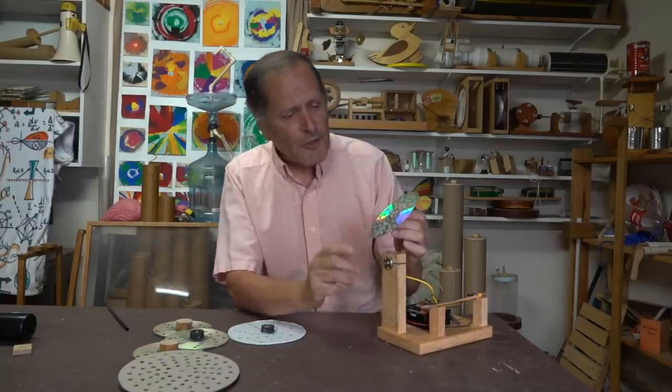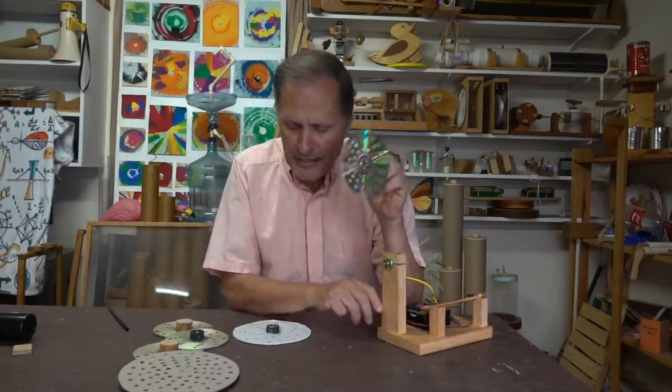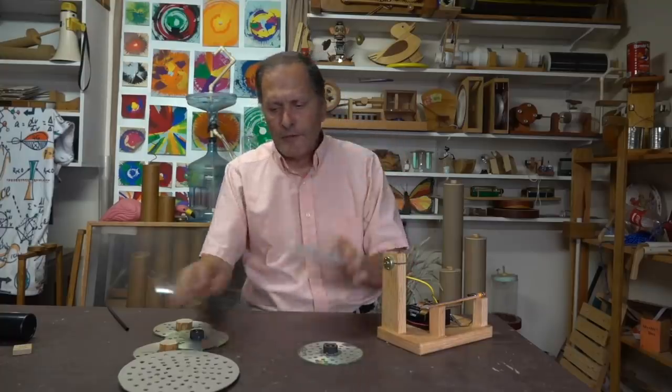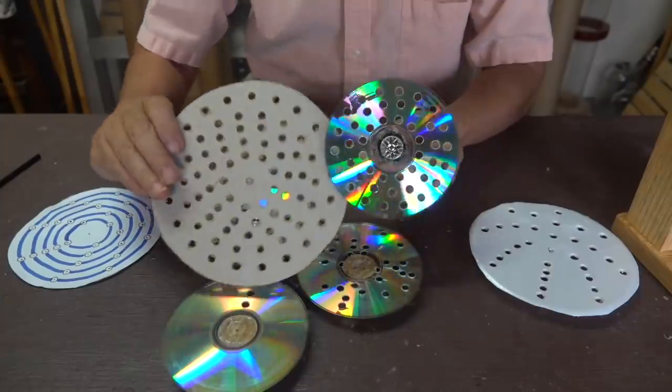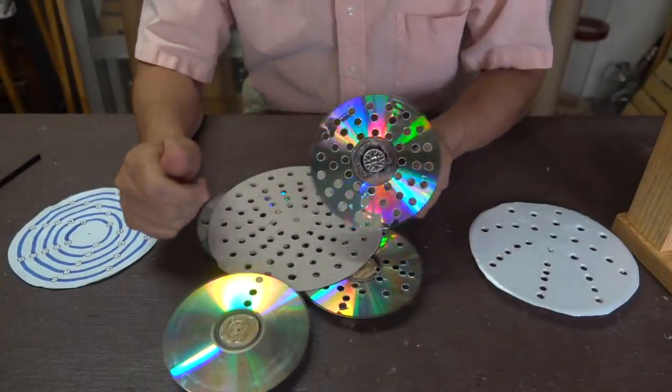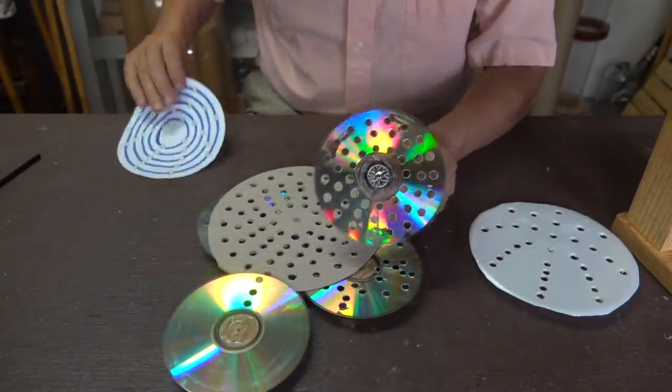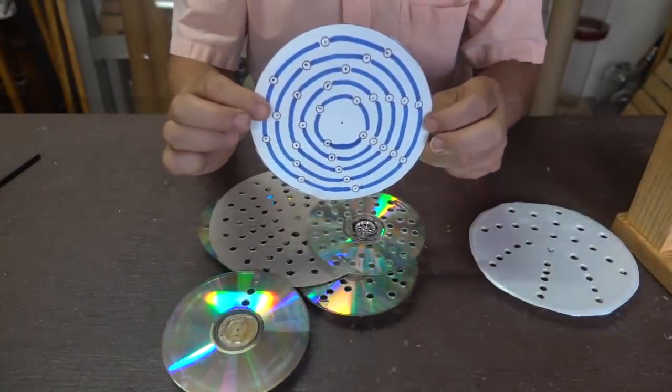Now, the ones I want to show you today are much simpler than that. They're either made from CDs, or they're made from a foam plate, or this one was made from the cardboard from a cereal box. In closer examination, we see that all these discs have holes in them, and those holes will actually match up to concentric circles.